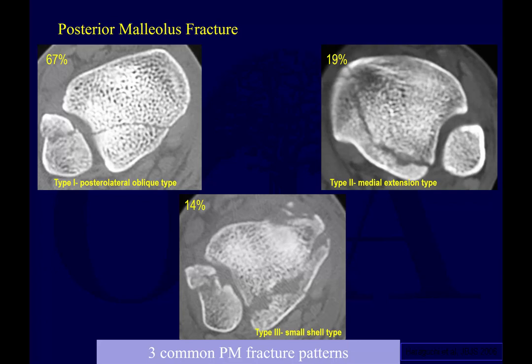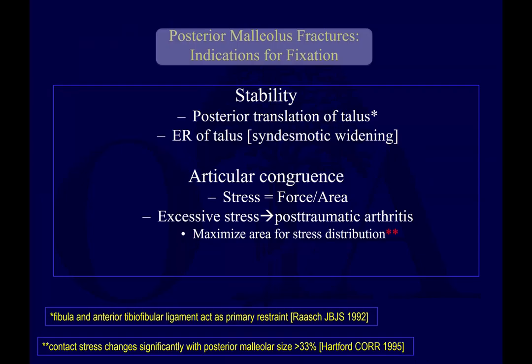Here you can see some of the fracture types. Type 1 is similar to what we just looked at. You can also have Type 2, where you have extension all the way over to the medial side. And on the bottom, you can see another type of fracture that occasionally you might see.